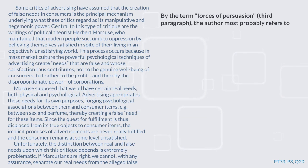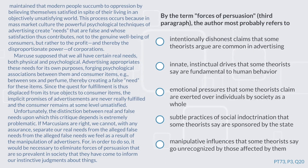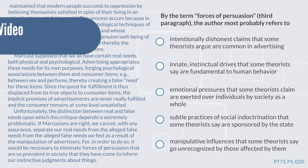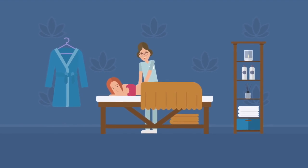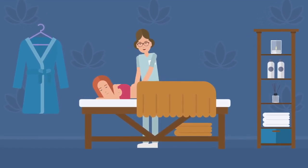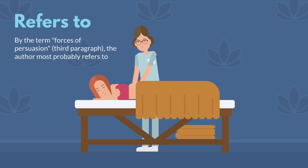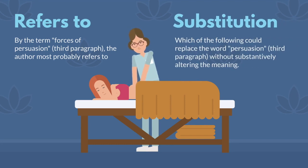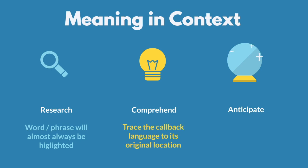Let's look at a meaning-in-context question from the same passage. The question is asking about something in the third paragraph, but when they say 'what does it refer to,' it could involve earlier stuff. This is a question we call meaning in context. When it comes to researching the passage, they're going to highlight the word for us, but we need to comprehend what this word refers to, and we may have to trace it back to an earlier paragraph.